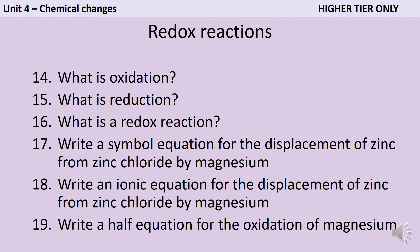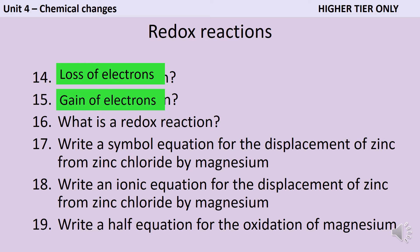If you're taking the higher tier papers, you also need some alternative definitions for oxidation and reduction — these are the ones you'll continue to use in A-level chemistry. Oxidation is the loss of electrons, and reduction is the gain of electrons. A redox reaction is a chemical reaction where both of those processes take place at the same time.